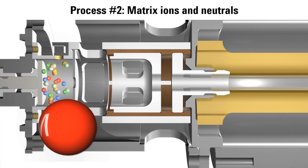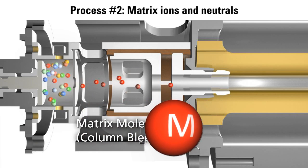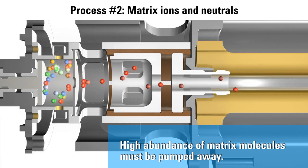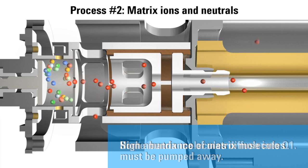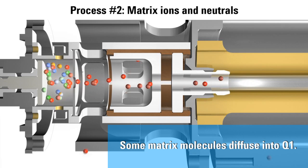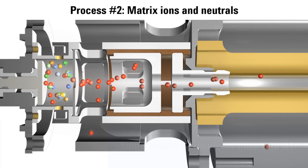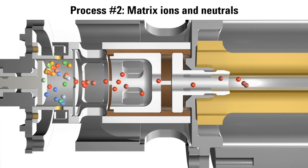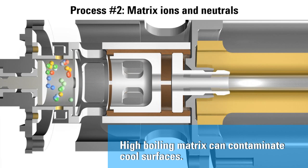Again we ask, what about the large population of non-ionized molecules? Although the turbo pump removes many neutrals quickly, some will randomly diffuse into the quadrupole. At the end of the GC separation, the EI source will be flooded with the highest boiling molecules from the sample matrix. Even in a vacuum, these high boiling molecules can contaminate surfaces in the mass spectrometer. A cool surface will accelerate this contamination process.